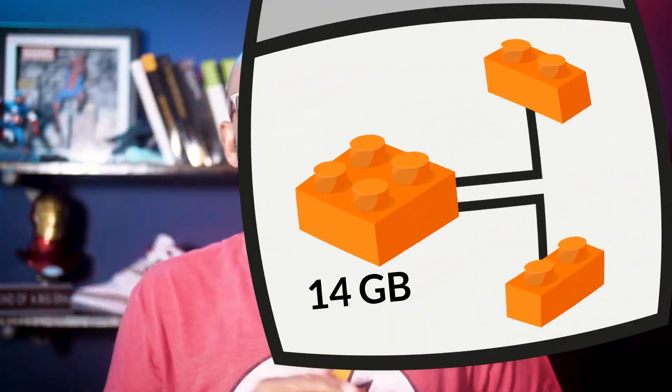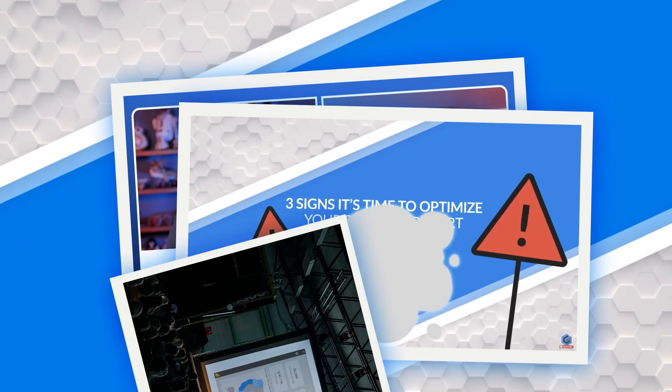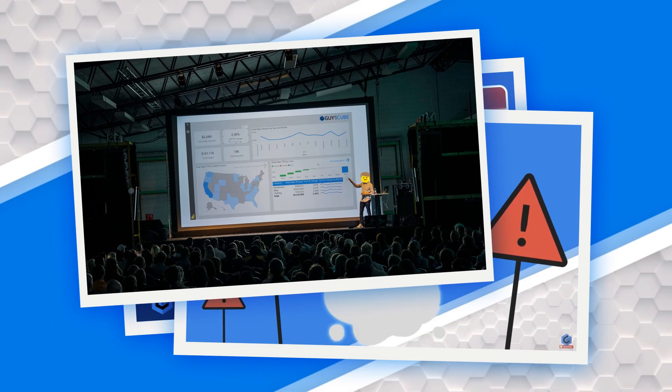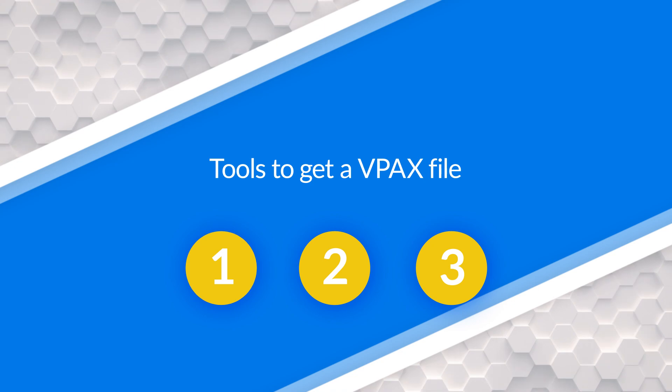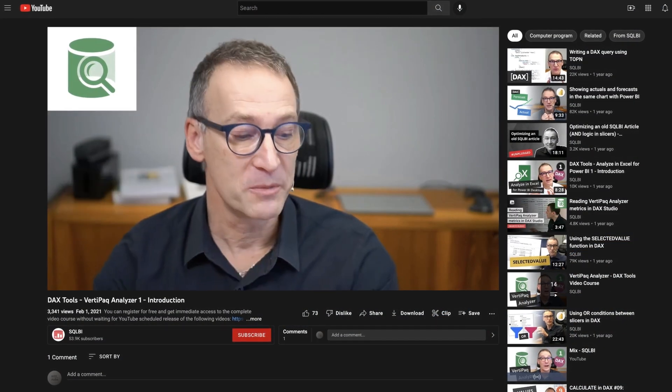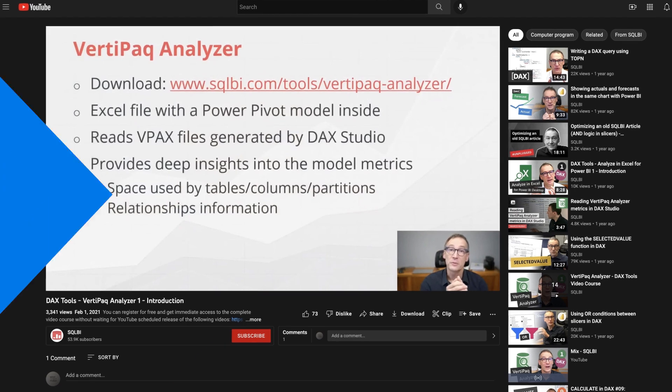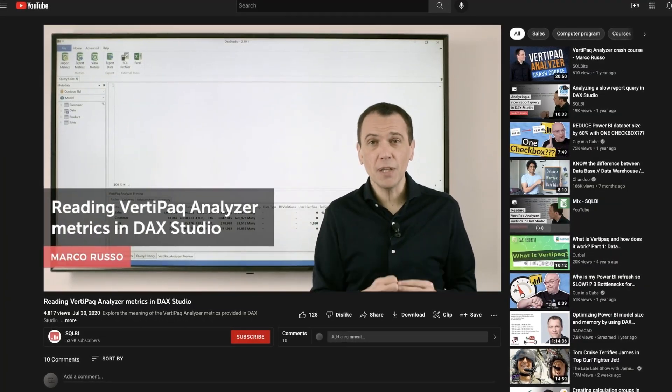So you've got this model and you're concerned it's going to get too large and you want to get some help optimizing its size. Adam and I talk about this all the time on our live stream, during videos, and at sessions we speak at. And I can't share the PBIX file because it contains sensitive data, or I don't have access to the PBIX file. What do I do? Well, there are three tools you can use to get the VPax file. I'm not going to go into all the details of the VPax file — Marco and Alberto have done great videos explaining exactly what it is. But in this video, I'm going to show you how to actually get that VPax file and share it with someone who has the skills to help you optimize the size of your model.